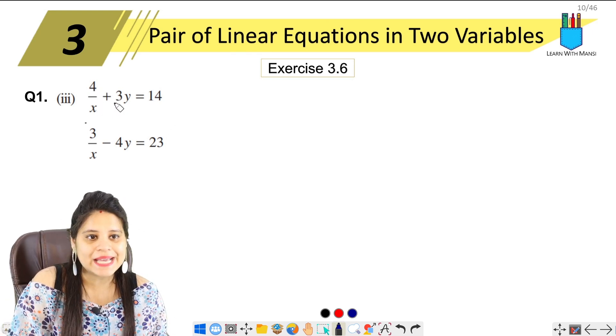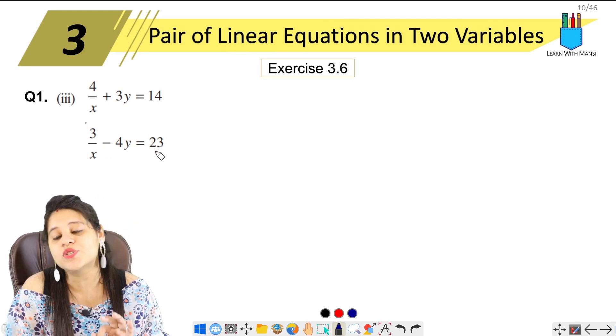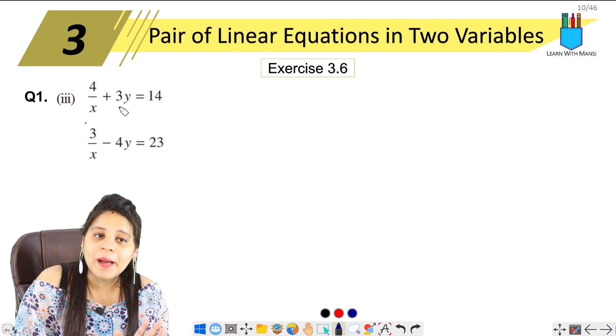4 upon x plus 3y equals to 14 and 3 upon x minus 4y equals to 23. So here, we need to change the term in y.